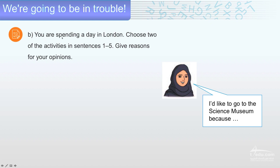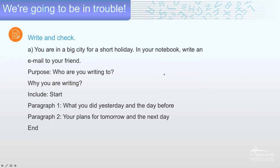B. You are spending a day in London. Choose two of the activities in sentences 1 to 5. Give reason for your opinion. Give example. I'd like to go to the Science Museum because I like science. For example. Another one, I'd like to go to the old castle because it's wonderful and I love old things. So choose two of the activities and sentences. Give reason for your opinion. Make it simple, everybody.